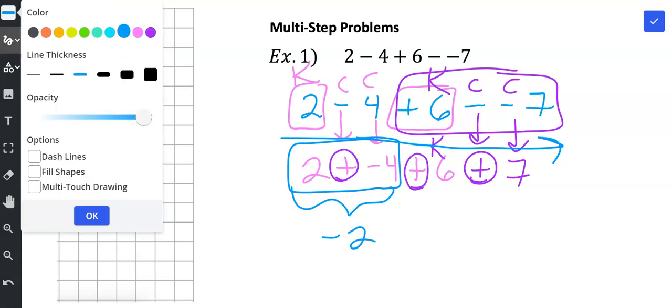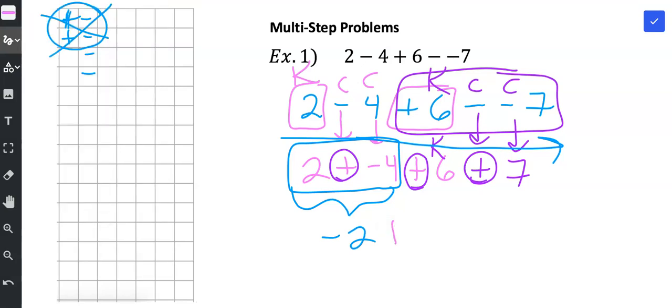Then from here I copy the rest of the problem. So here's the rest of the problem. I bring down the addition of 6 and the addition of 7.